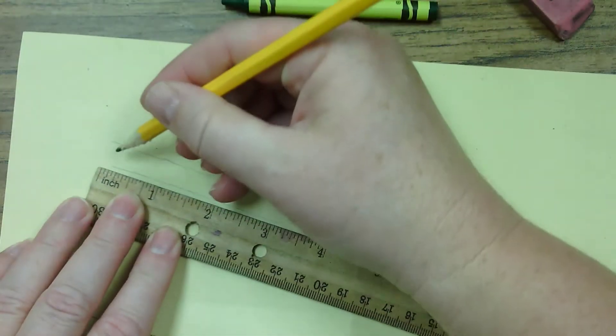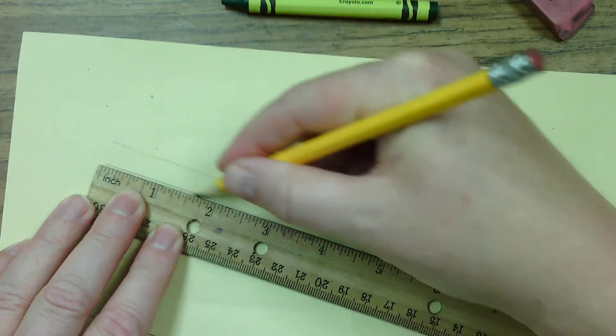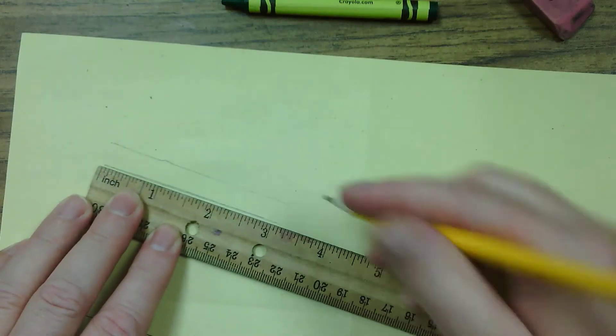Now when you trace it, it kind of rolls around. Your lines aren't going to be straight. So grab a ruler and straighten up the lines.